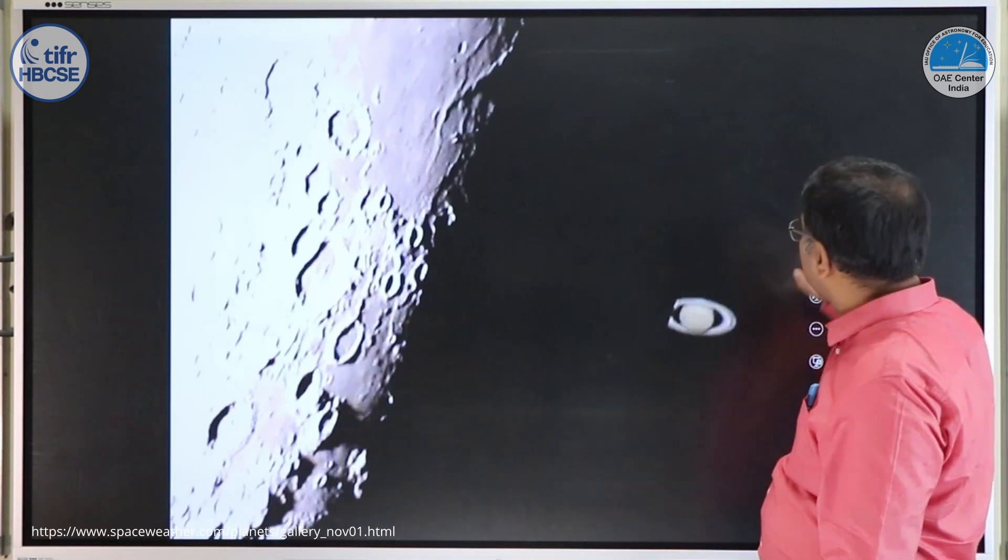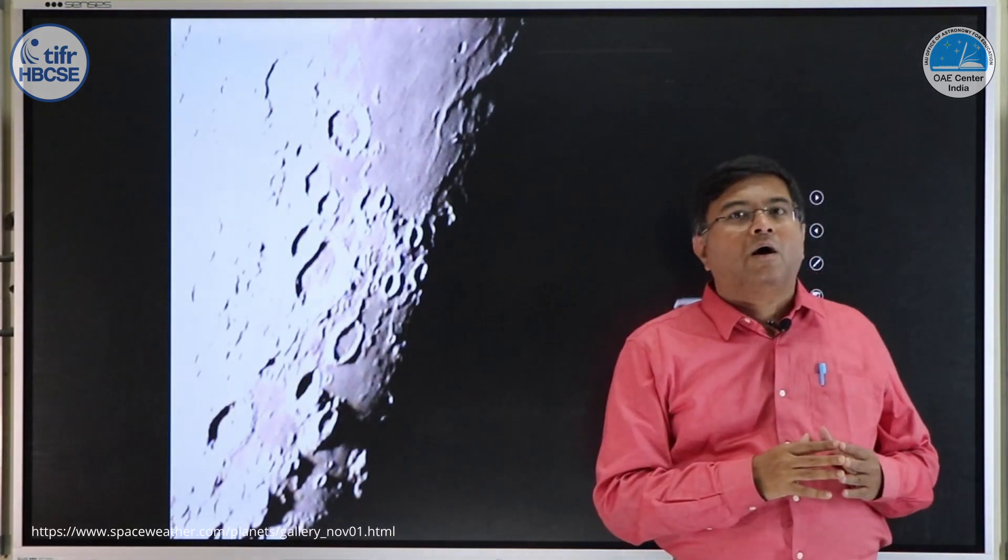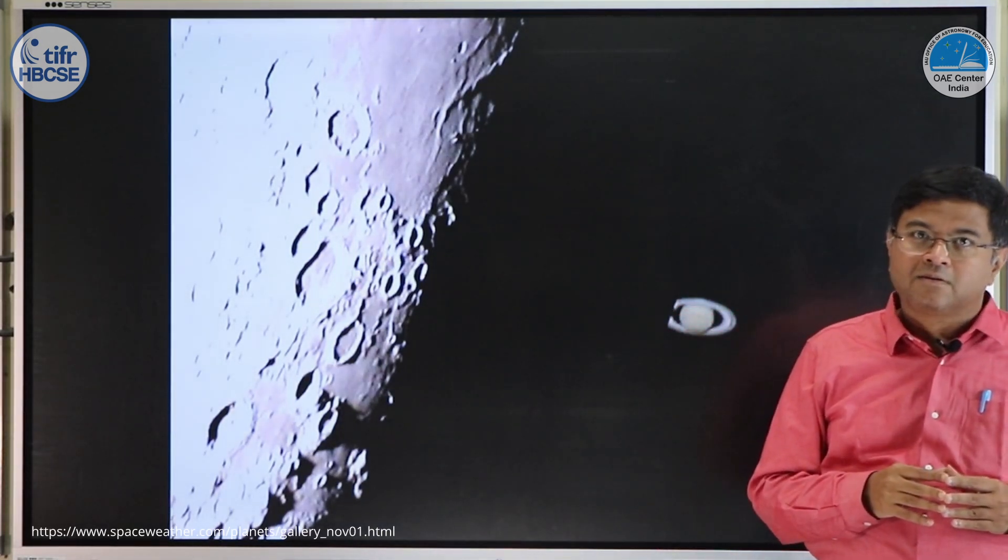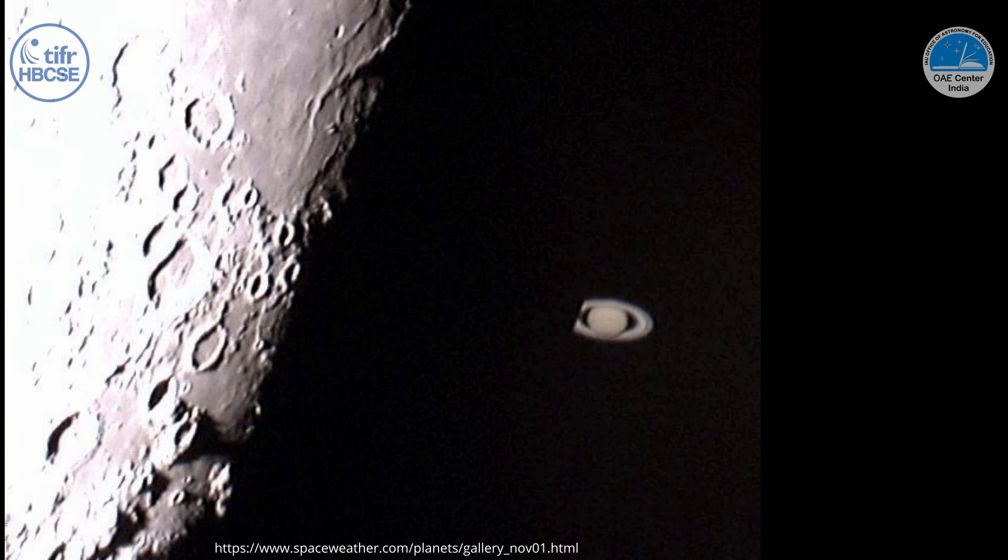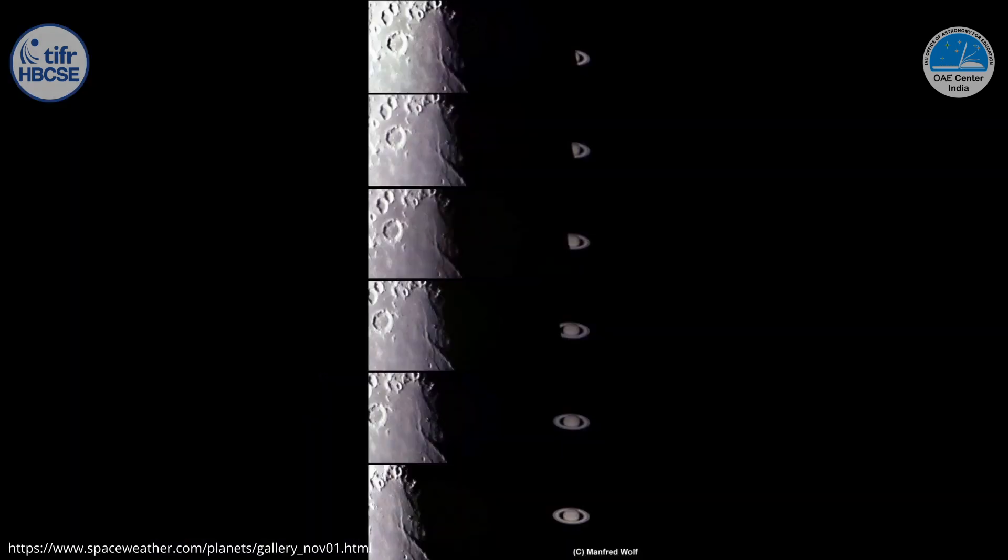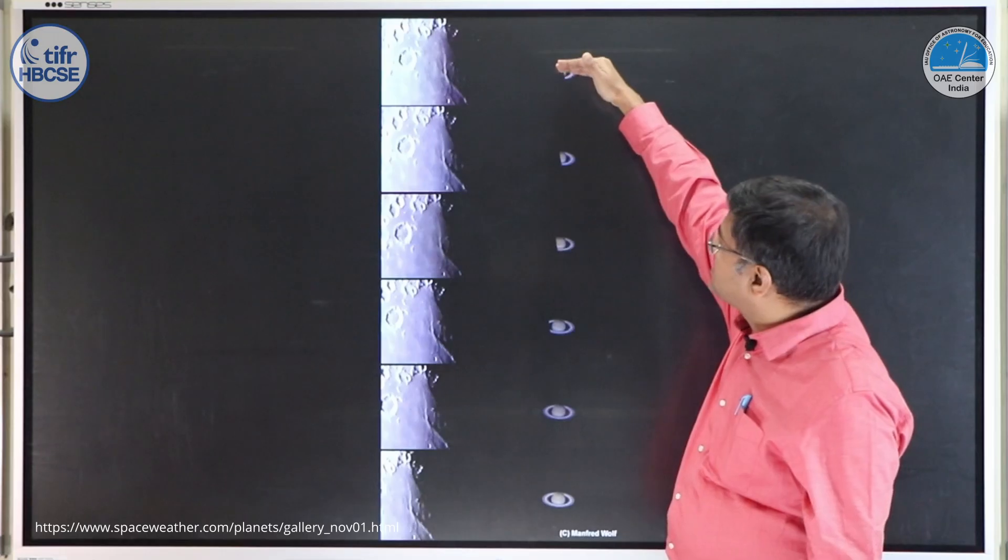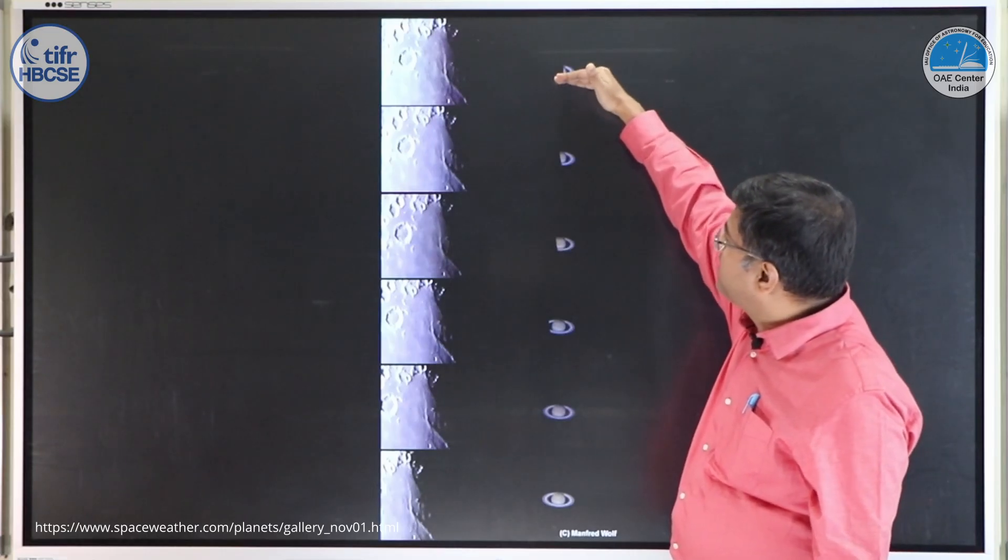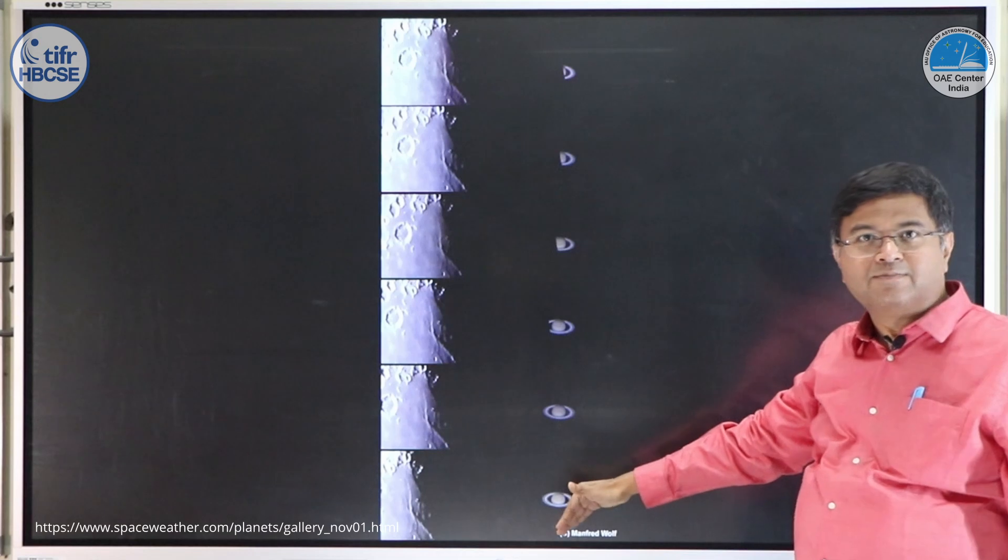Another example of moon occulting Saturn. Here you can see there is a larger part of moon, this dark part of moon, and Saturn is going behind a dark part of moon, so the rings are getting cut because part of the rings are already behind the lunar disk. There is a time-lapse photo. You can see Saturn is coming out from behind, and you can see more and more parts of Saturn as it comes out.